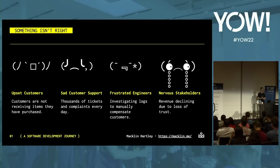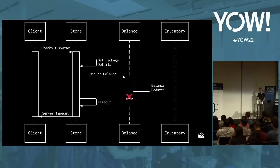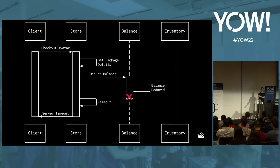The team looks at the architecture and investigates possible failure scenarios. They notice that occasionally the balance service crashes after deducting the balance. The store receives no response from the balance service and then times out — it doesn't know whether the balance was deducted or not. They cannot proceed to send a request to inventory to assign the avatar because they don't know what happened. In this scenario, the workflow timed out and was left in an incomplete state — the customer's balance was debited but the item was not assigned.